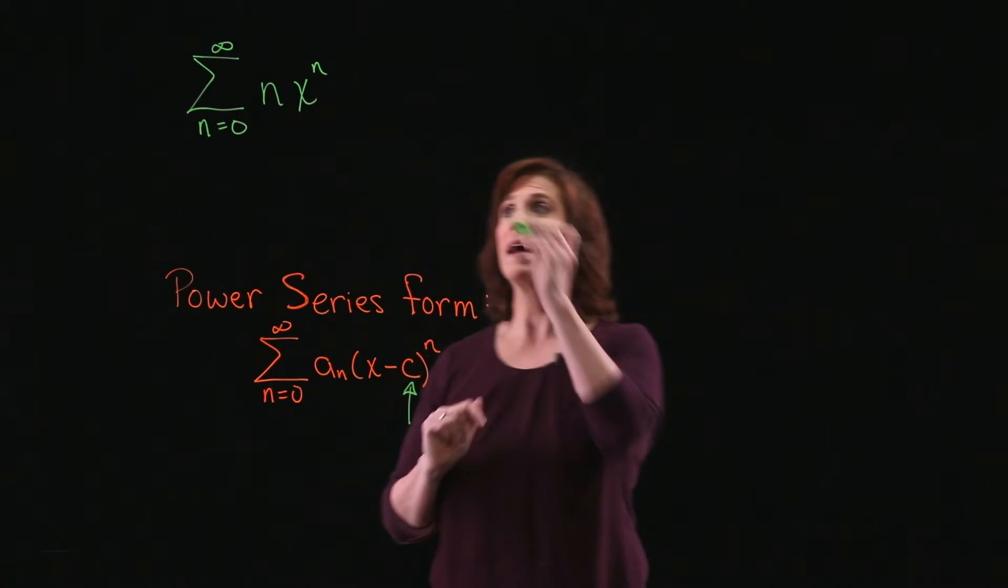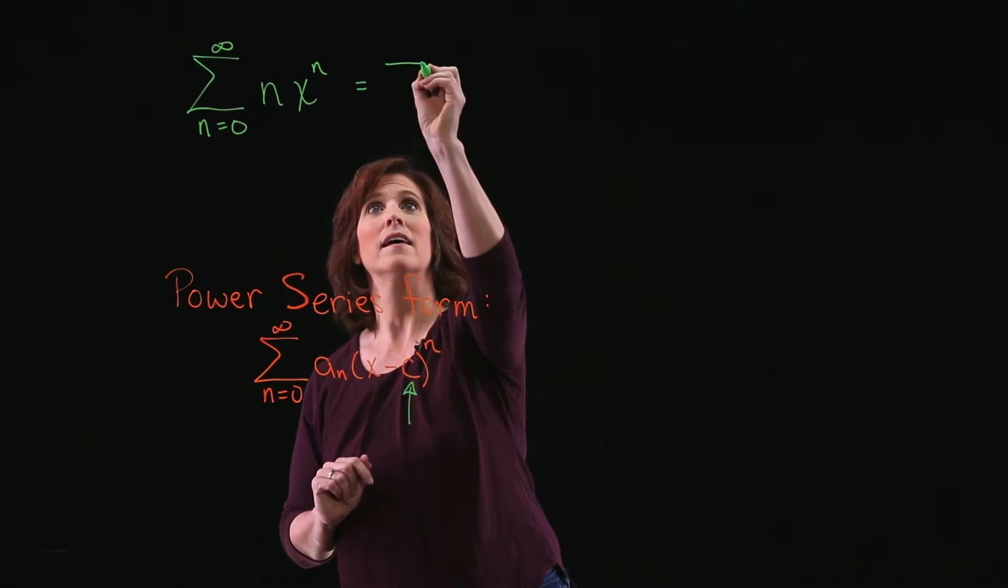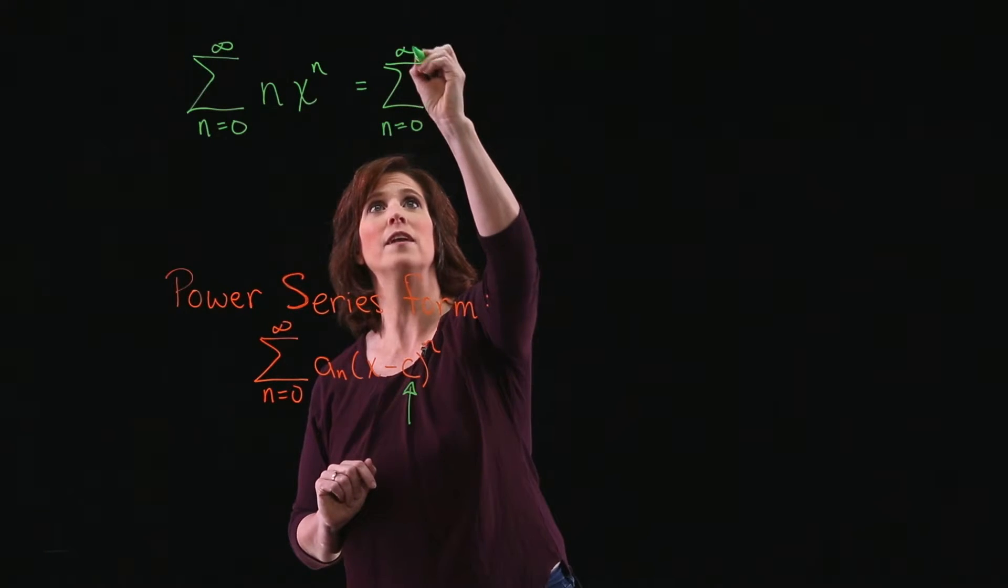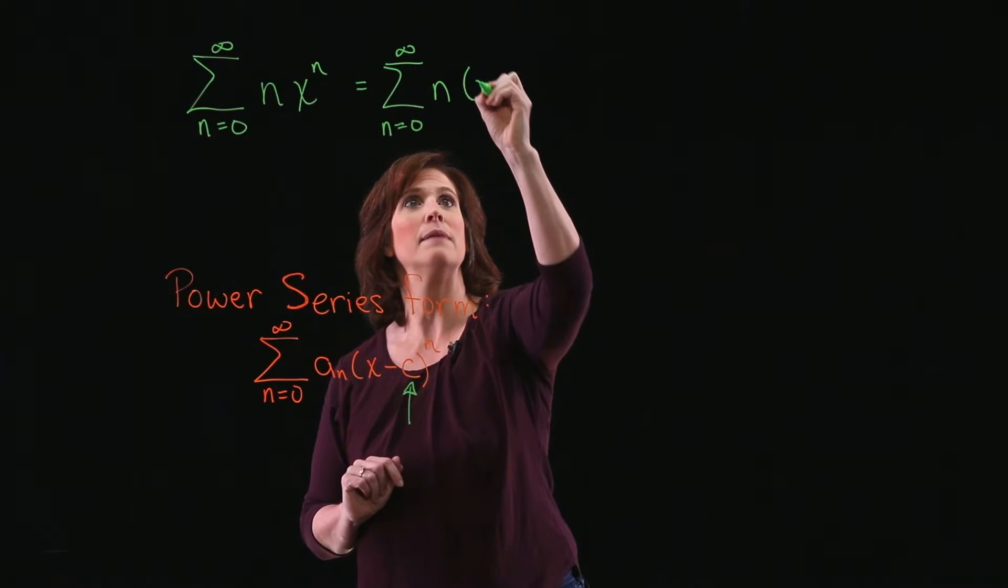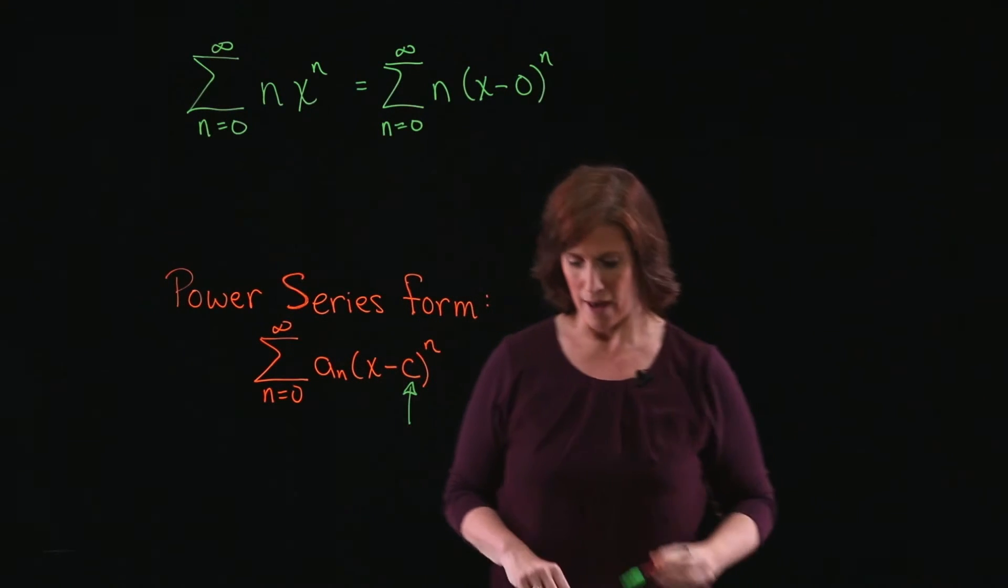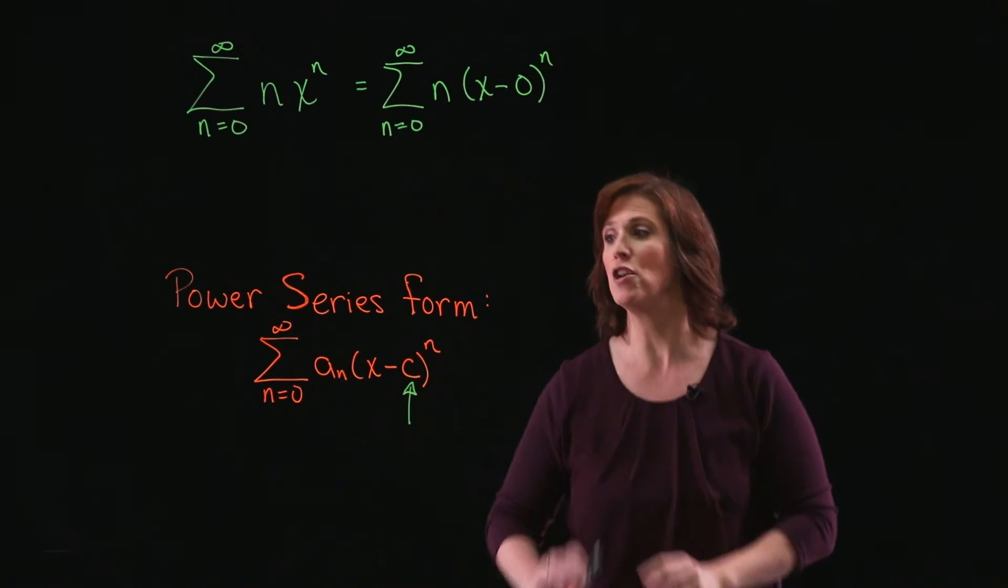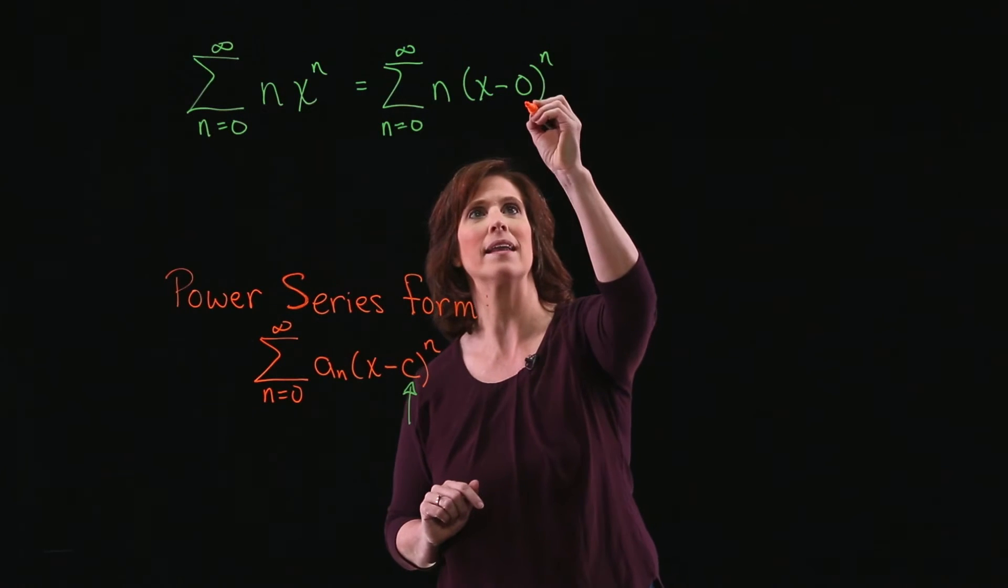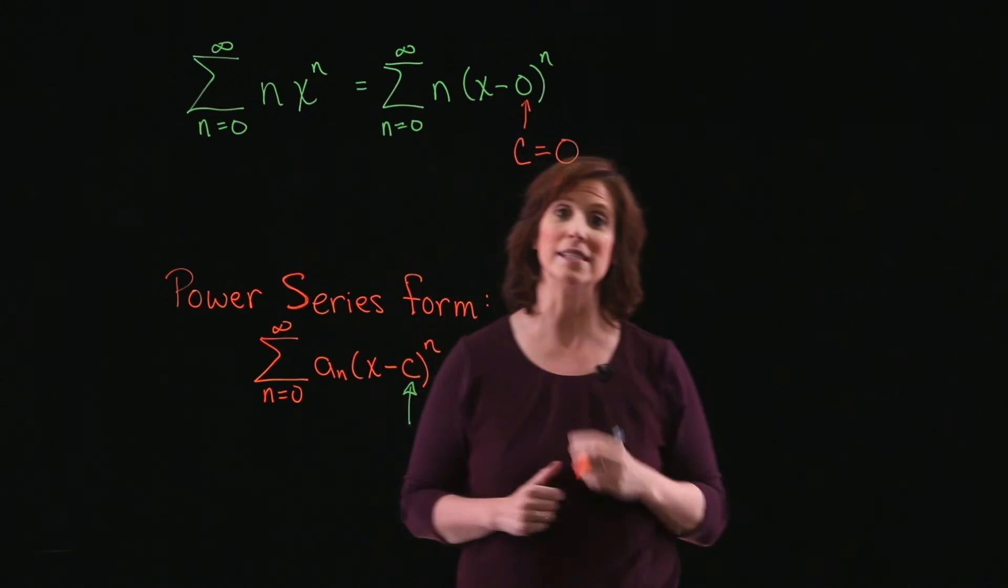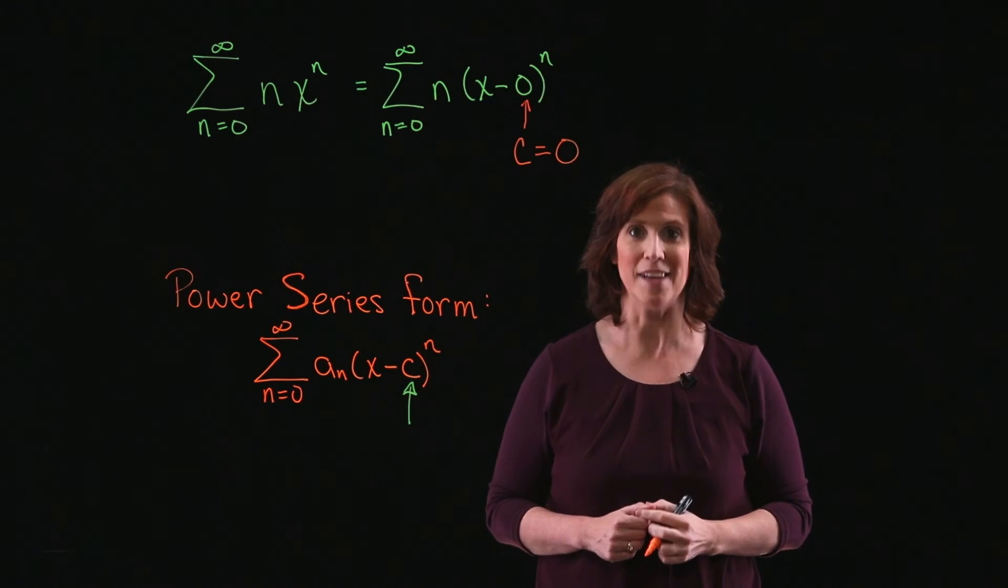So if I rewrite my given series, I can write it as the sum from n equals 0 to infinity of n times the quantity x minus 0 to the nth power. And I haven't changed anything, but I noticed that written in this format, my c value is equal to 0. So my power series is centered at 0.